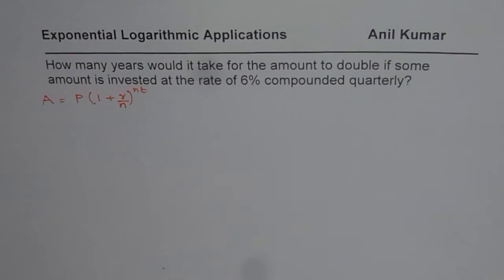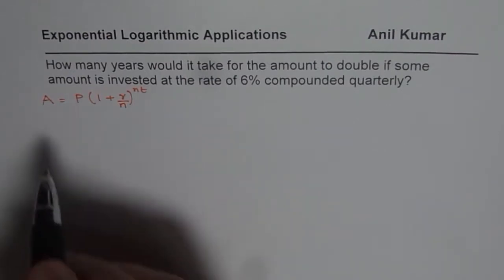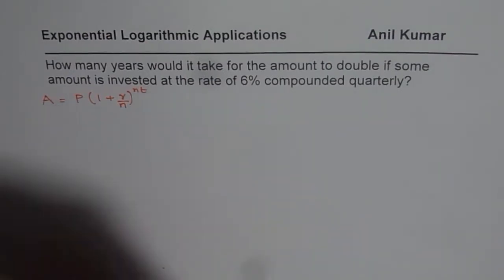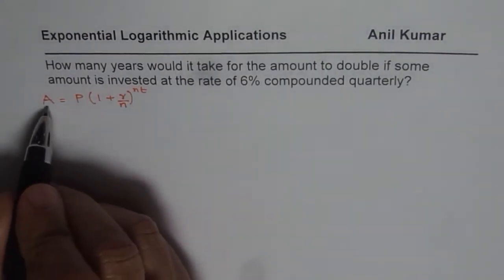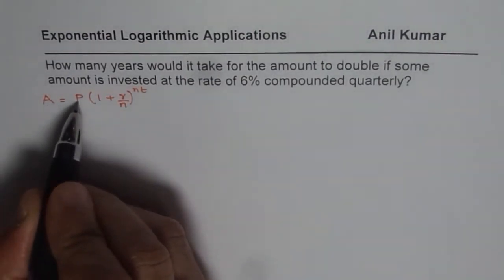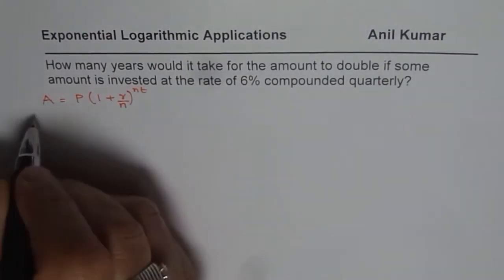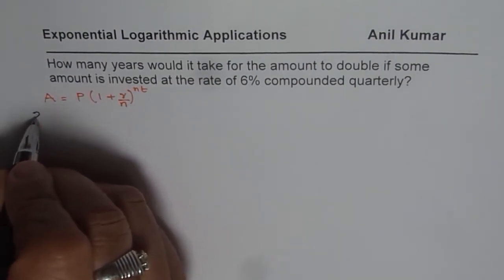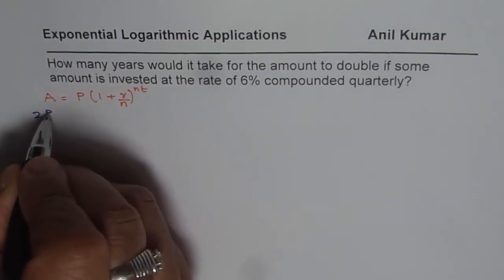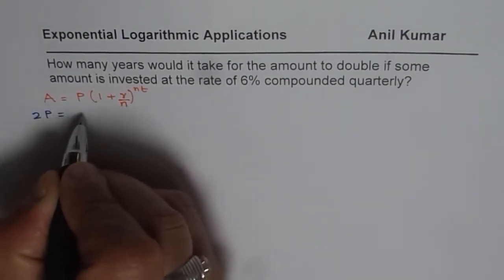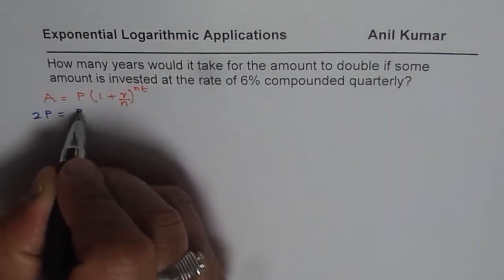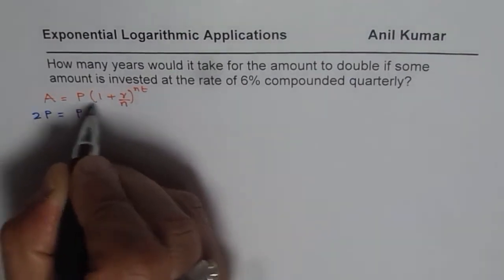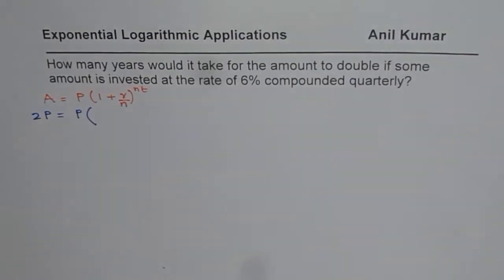In this case, we need to find the doubling period, therefore the amount becomes twice the principal amount. So amount can be written as 2 times the principal amount, whatever the principal amount may be — it doesn't really matter. We are doubling it.